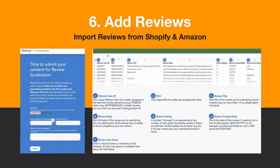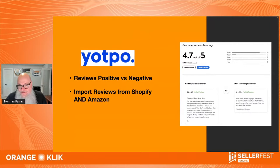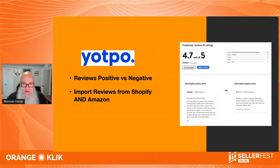Step six is getting reviews. If you're brand new on Walmart, you can bring in reviews through review syndication. If you have Shopify, you can import them — and you can also import from Amazon, but you must import all reviews including one-stars, nothing can be left out. Apps like Yopto can bring in all your Shopify reviews, which helps your listing optimization score. Just like Amazon, customers want to see trust through reviews.